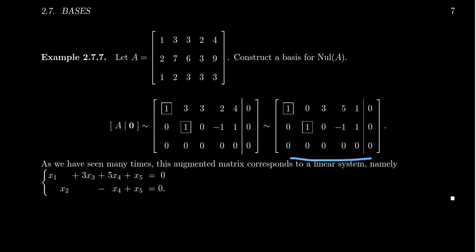So when we take the RREF form of this augmented matrix, the first row gives us x1 plus 3x3 plus 5x4 plus x5 equals zero. The second row gives us the equation x2 minus x4 plus x5 equals zero. The third row is just zero equals zero, which offers no benefit to the system whatsoever, so I omitted it.